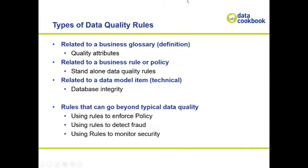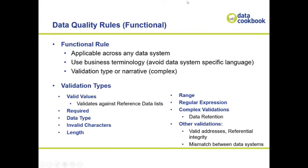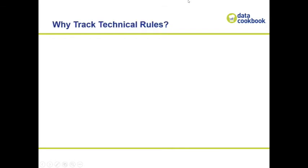You can set up a data quality rule to monitor, assess, and report things that have exceeded that rule. For functional rules, it's similar to how we do business glossary entries — you define high-level, system-agnostic definitions, like 'birth date is required.' There are different validation types: valid values, required, data type, invalid characters, length, range, regular expression, and complex validations. The key point is that on the functional side you're not writing system-specific rules — you wouldn't name a rule 'birth_date in per_table cannot be null.'